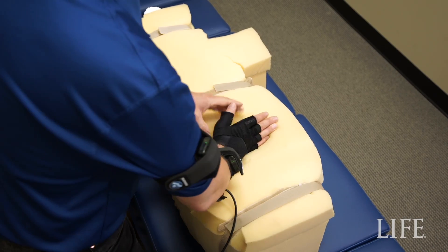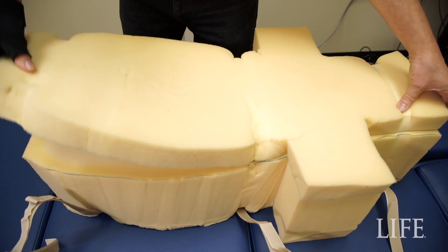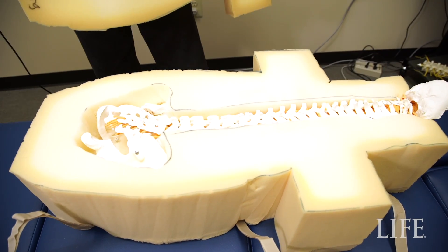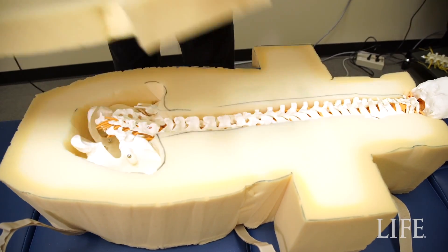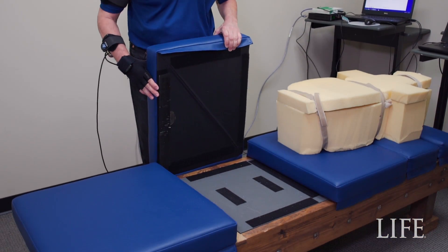First off, this big block of foam we call a mannequin. It's a little bit crude as a mannequin, but it does have a plastic spine inside. This looks like a normal chiropractic table. It has a force plate inside.